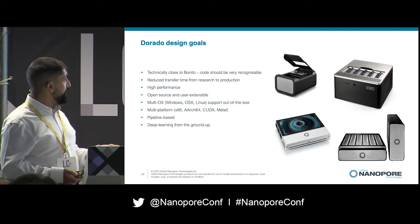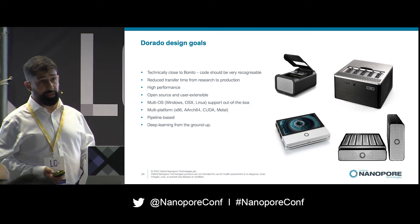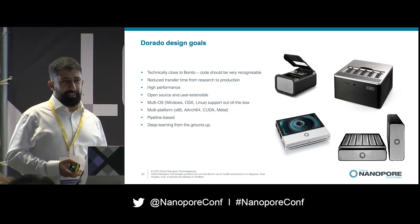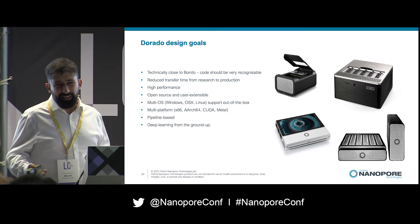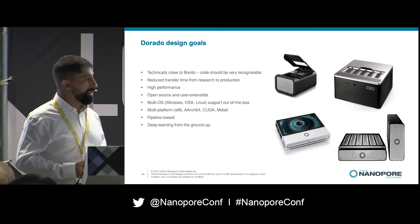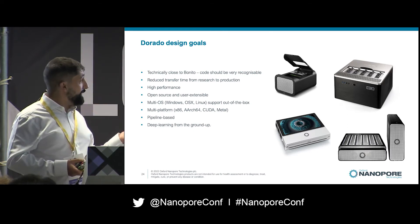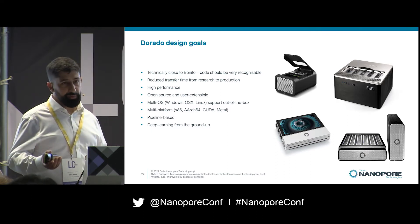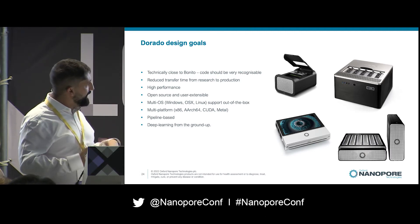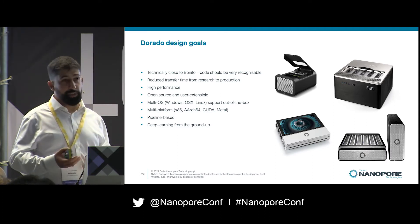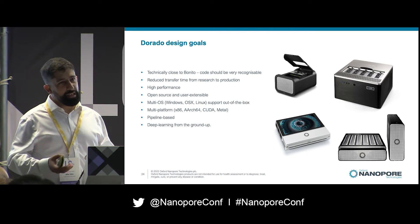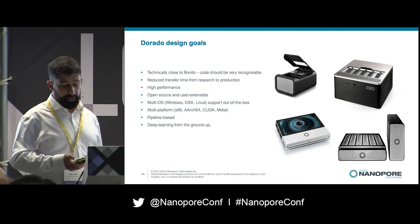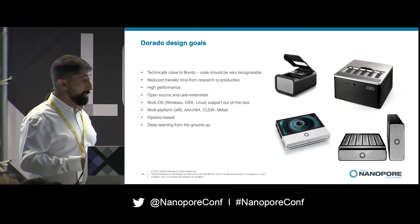We want Dorado to be high performance. We want it to be open source and user extensible — it's no good being open source if the code is so confusing that no one can actually do anything with it. Multi-OS, multi-platform; we want to support CUDA and Metal, which is the API for programming Apple GPUs. Pipeline-based and deep learning from the ground up. For the foreseeable future, we're going to be using deep learning for developing base callers.